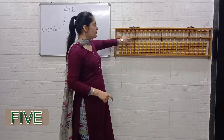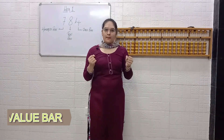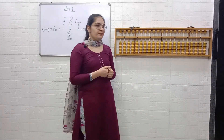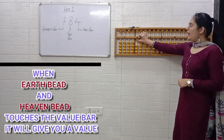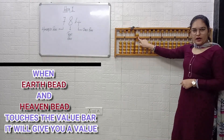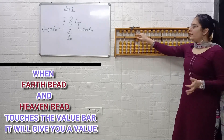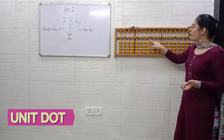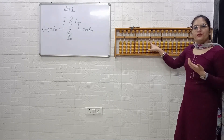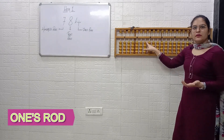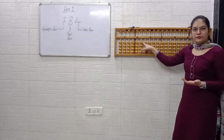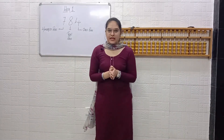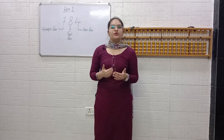Perfect. What is this? It is the value bar. Why do we call it value bar? When Earth beads and Heaven beads touch the value bar, it gives you a value. And what is this? The unit dot. The rod below it is the 1s rod. On the left is the 10s rod. Further left is the 100s rod.